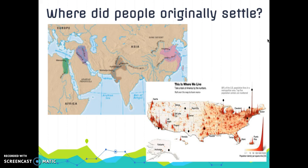People originally settled in places that were low-lying, meaning there are not a lot of hills, with fertile soil and a temperate climate. We see most people living near an ocean or a river valley rather than the interior of a landmass. We also see people settling near transportation or trade routes. The big idea is people are living near water in places where they can grow food.